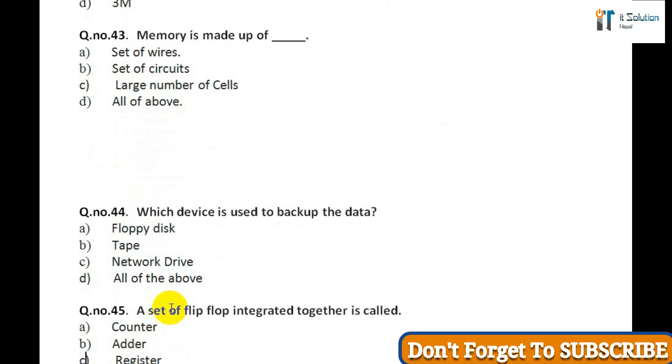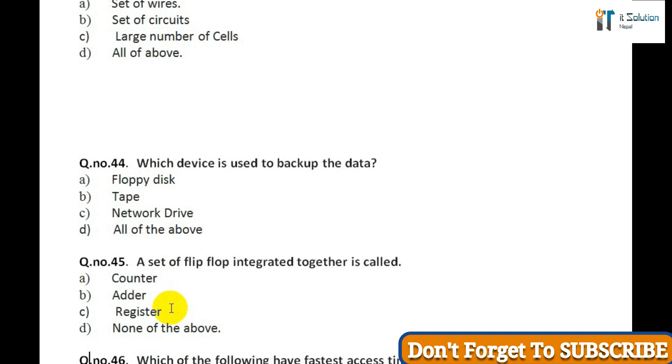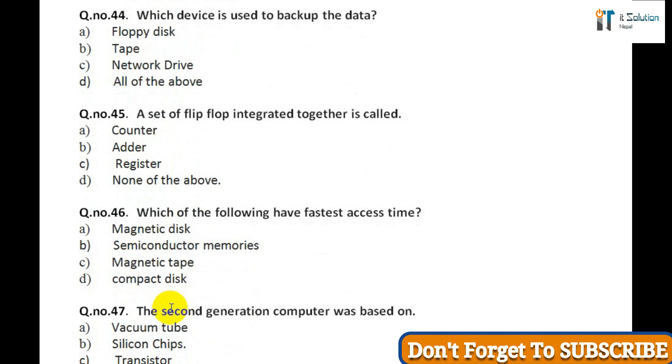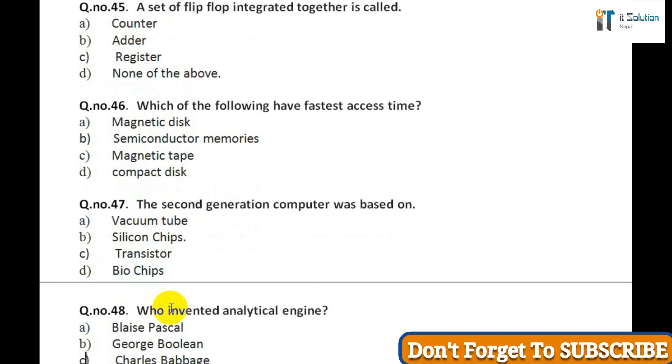Question thirty-eight: In HTML, URL is used to: A) Create a frame document, B) Create an image map in the web page, C) Customize the image map in the web page, D) Identify or name a resource on the internet. Question thirty-nine: CSS is an acronym for: A) Custom style sheet, B) Cascading style sheet, C) Cascading system sheet, D) None of above.